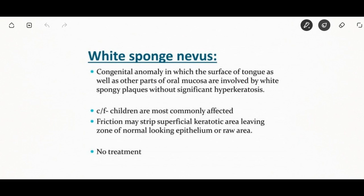White sponge nevus is a congenital anomaly in which the surface of the tongue as well as other parts of the mucosa are involved by white spongy plaques without significant hyperkeratosis. It is seen mainly in children; friction may strip the superficial keratotic area leaving a zone of normal-looking epithelium or raw area. No treatment is required for white sponge nevus.